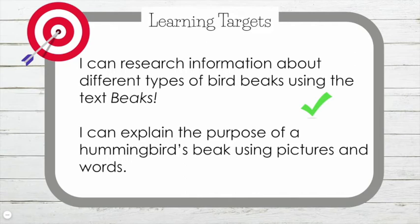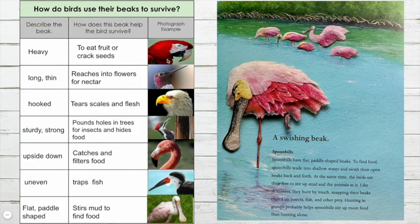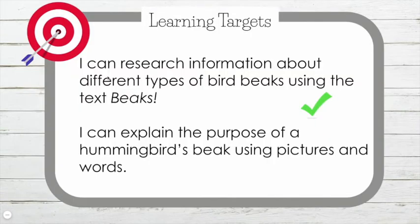Do you remember the purpose of the hummingbird's beak? Let's go back and find it on our chart. Find the picture of the hummingbird — point to it. We said that the beak was long and thin and that it reaches into flowers for nectar. Can you restate that purpose to me? What does the hummingbird's beak do? That's right — it reaches into the flower to get the nectar.